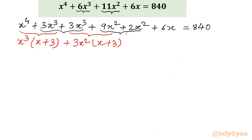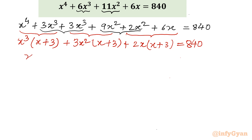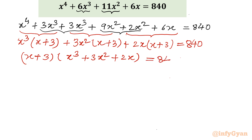Now from the last two terms we will take 2x common — what is left? x plus 3. The RHS is unchanged. Now you can see x plus 3 appears in every group, so I will factor out x plus 3 entirely. What remains inside is x³ + 3x² + 2x, equal to 840.